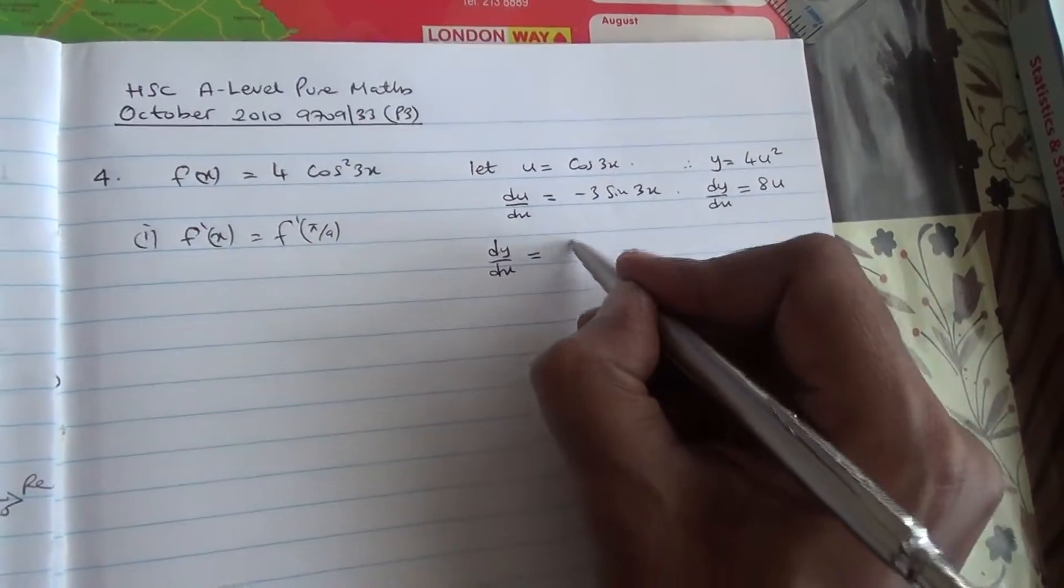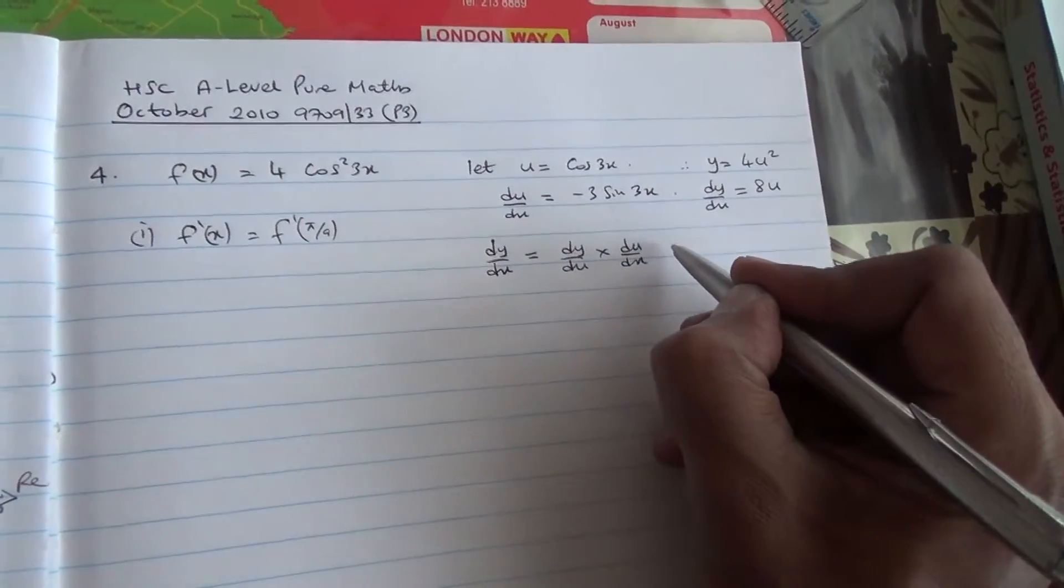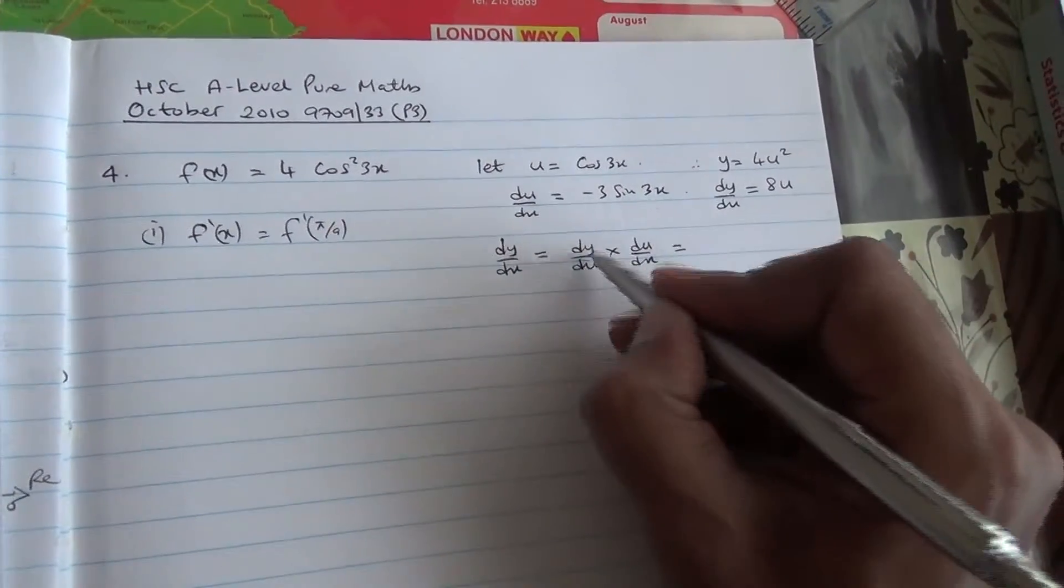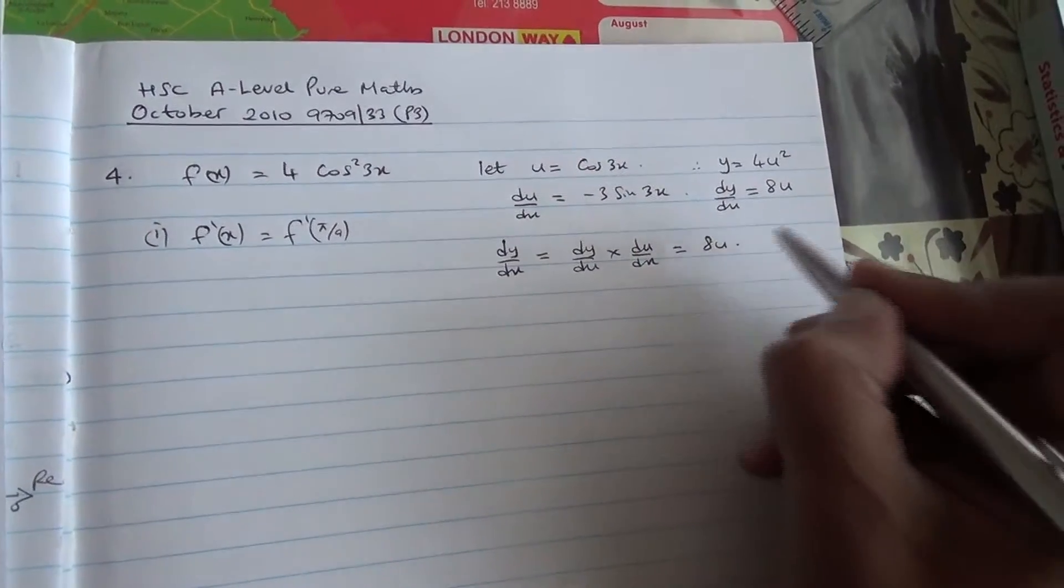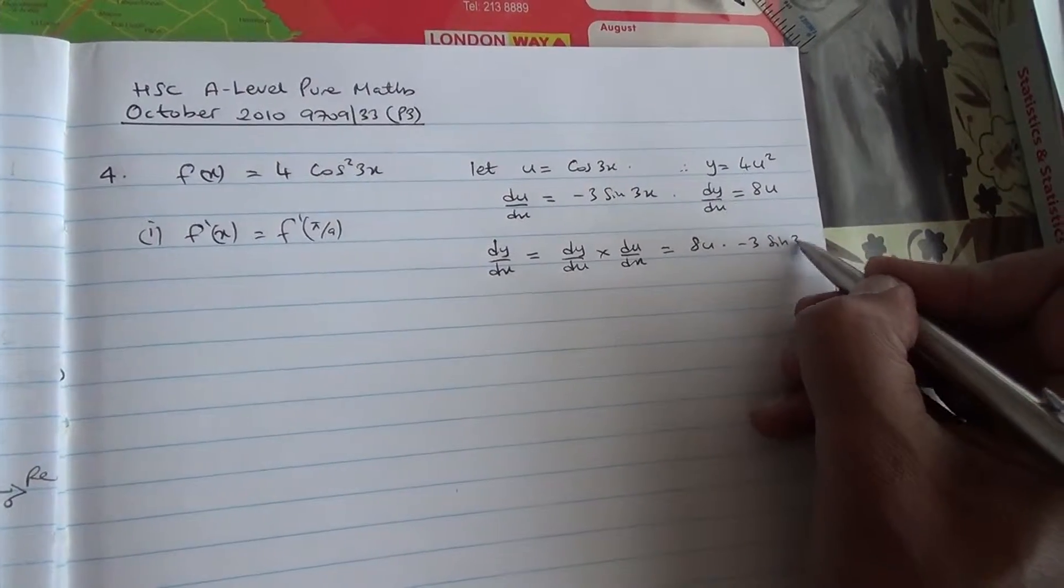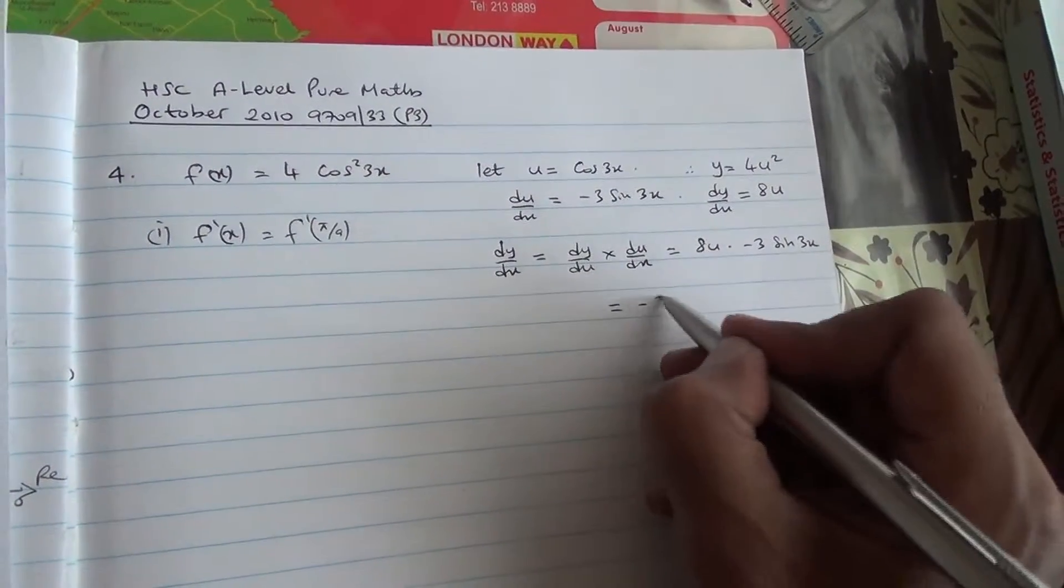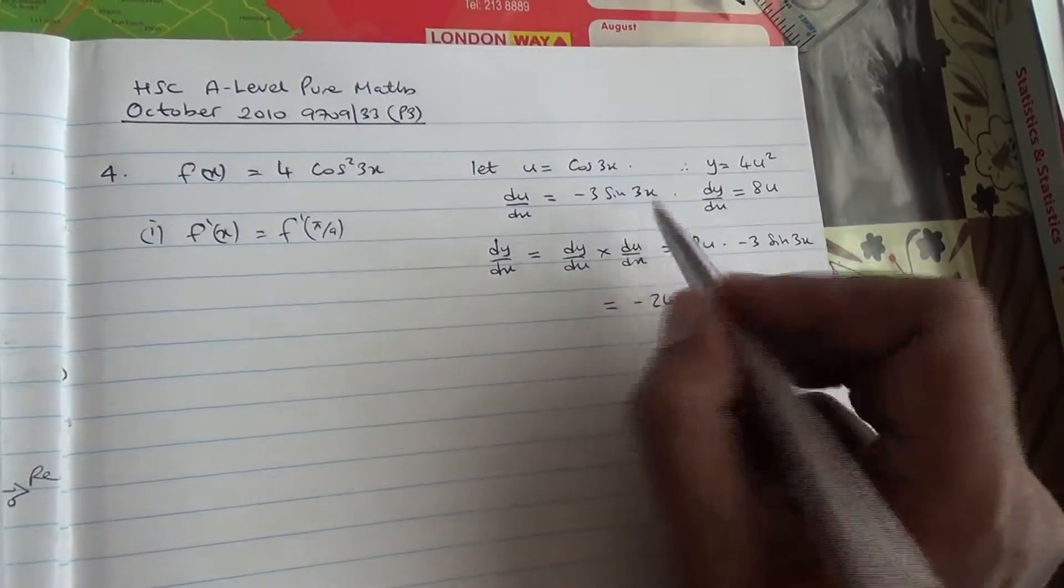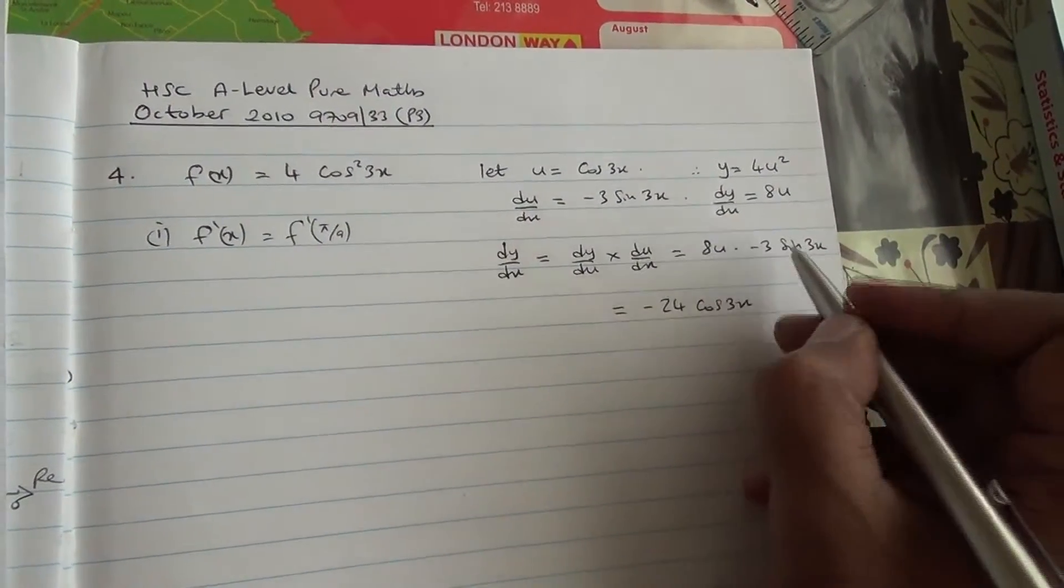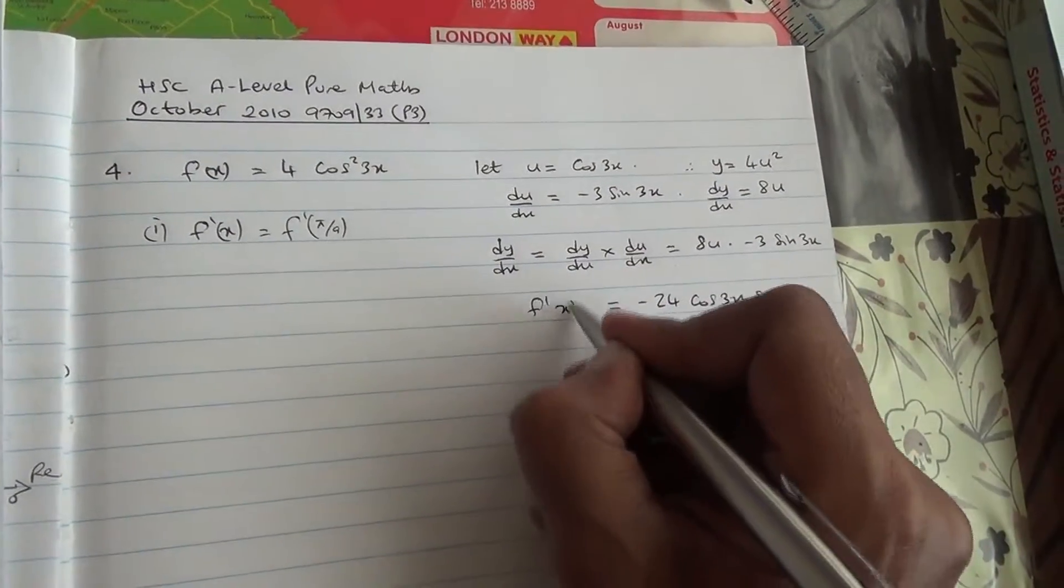So dy/dx is going to be dy/du times du/dx. What is that going to give us? dy/du is 8u times du/dx times minus 3 sin 3x. In other words, minus 3 times 8 is minus 24, u is equal to cos 3x, and then sin 3x. Now, this is f dash x.